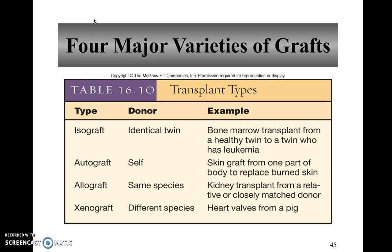Allografts involve two unrelated or somewhat related individuals — one is the donor, one is the recipient — but they are members of the same species, typically both human beings. For example, if someone's kidneys fail and they need a kidney transplant, they receive a kidney from a relative or a closely matched donor. The better the match, the more likely the graft will be successful.